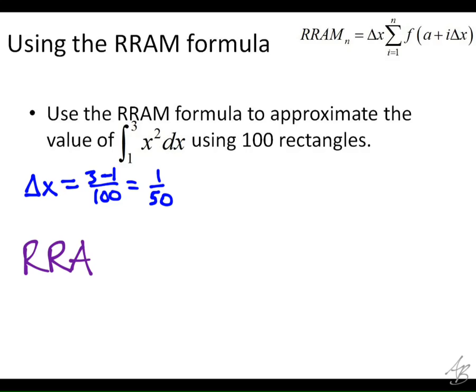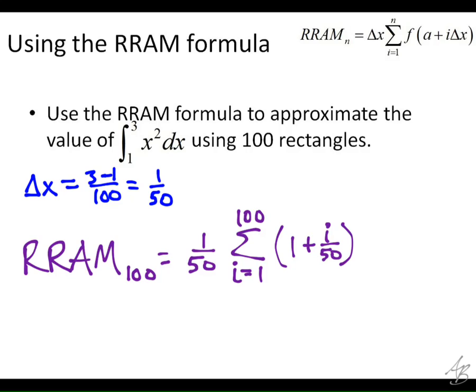So we plug it into the formula. Our RAM for 100 rectangles is going to be delta x, 1 fiftieth, times the sum. This time i is going to range from what to what? 1 to 100. That means we have 100 things to add together. That's going to suck. And then I'm going to go ahead and plug it straight into the function. So a is still 1, plus we're going to have i times delta x, so that would be i over 50, and that's going to be squared.